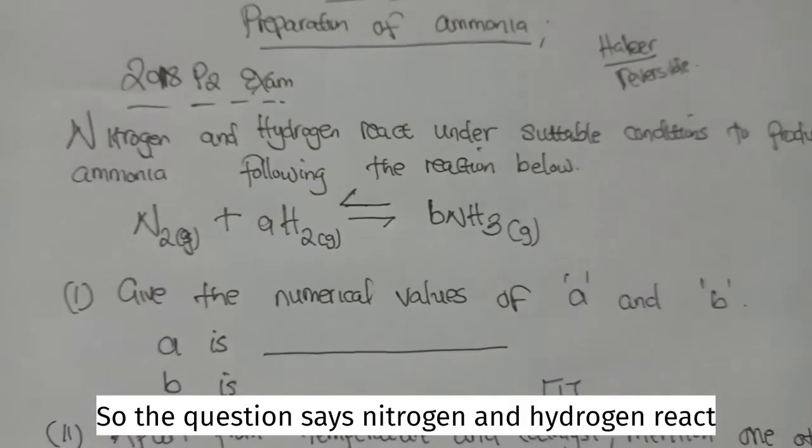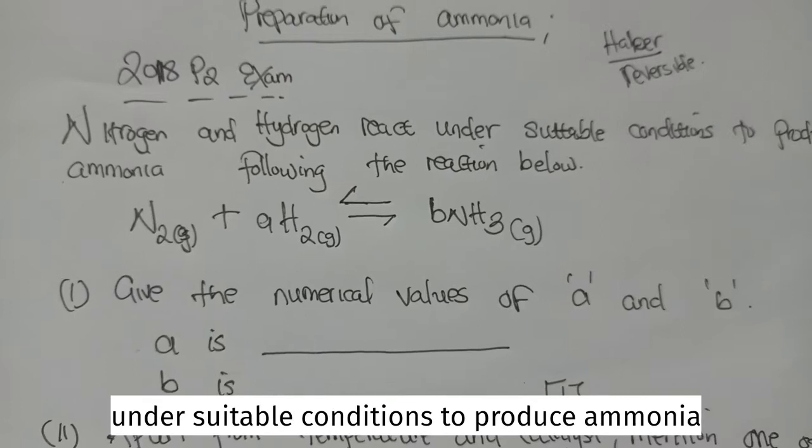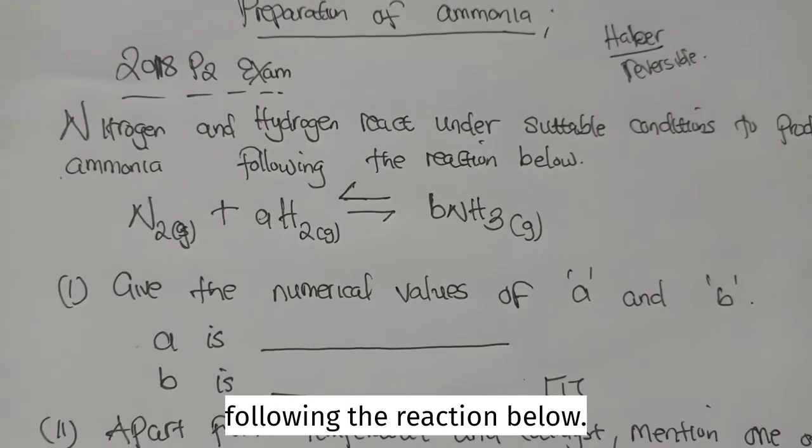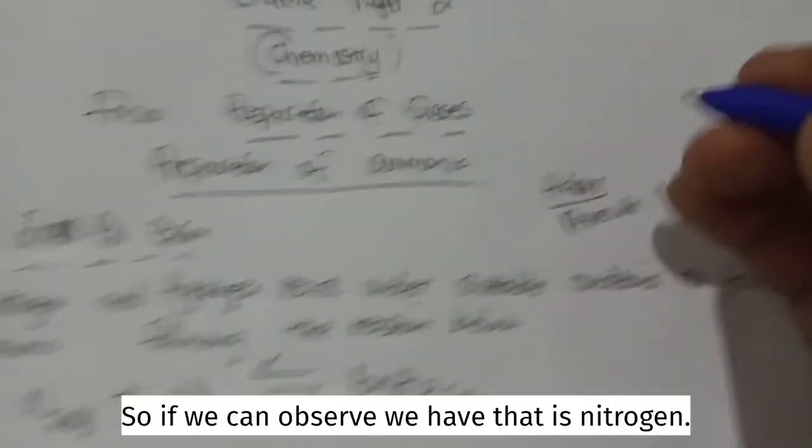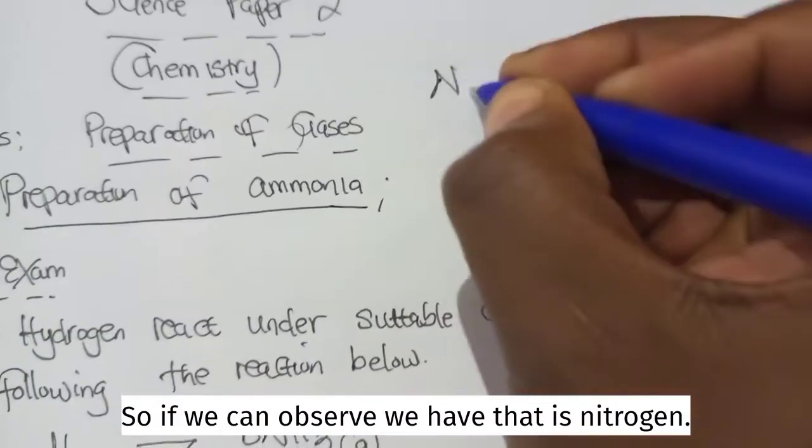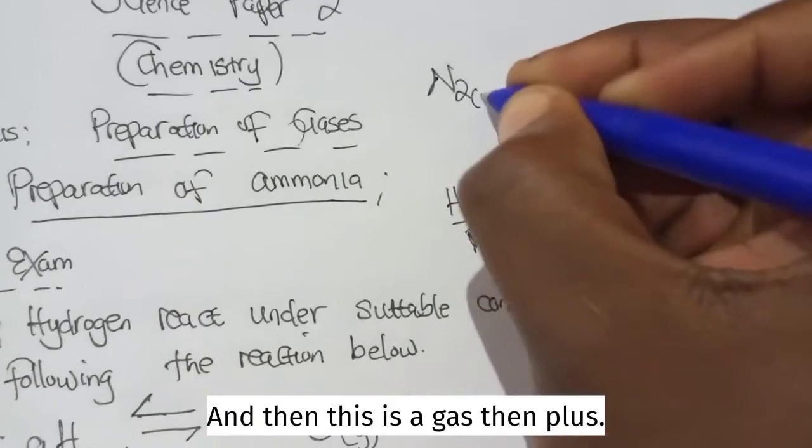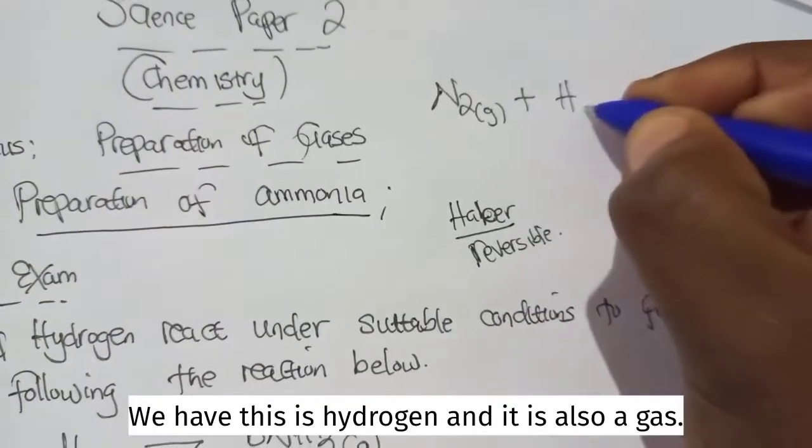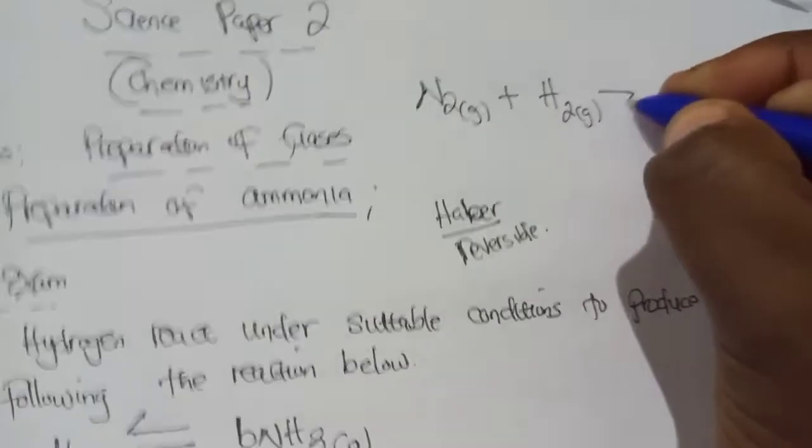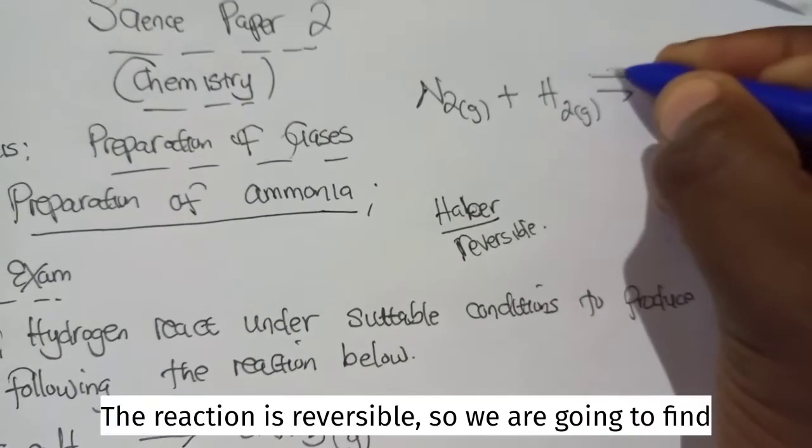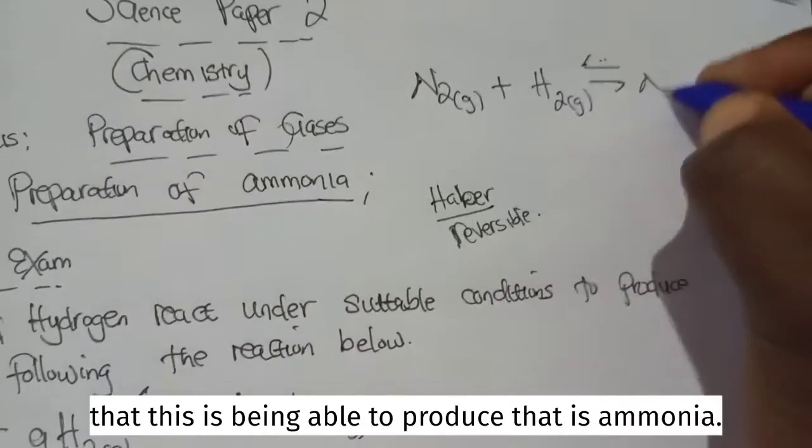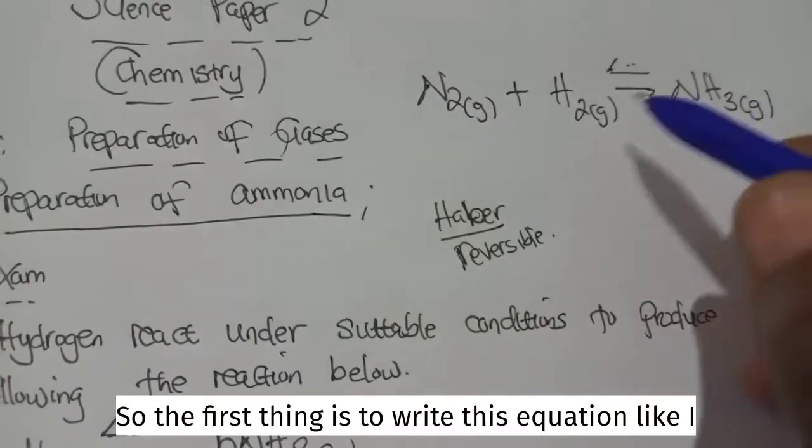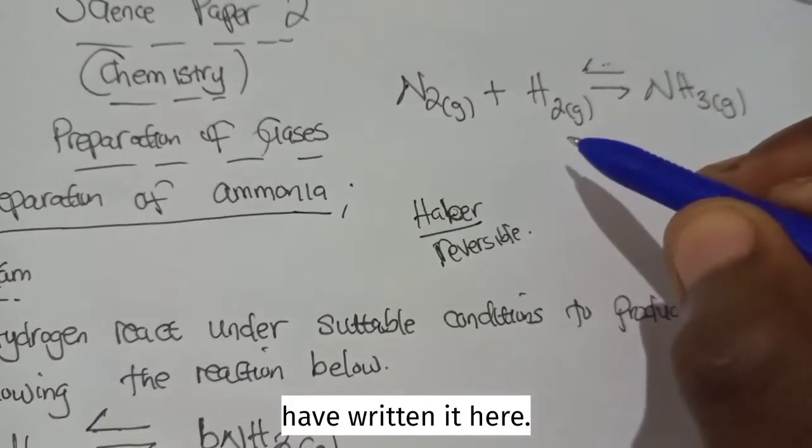The question says, nitrogen and hydrogen react under suitable conditions to produce ammonia following the reaction below. If we can observe, we have N2, that is nitrogen, and then this is a gas, then plus H2, this is hydrogen, and it is also a gas. The reaction is reversible. So, we're going to find that this is being able to produce ammonia.